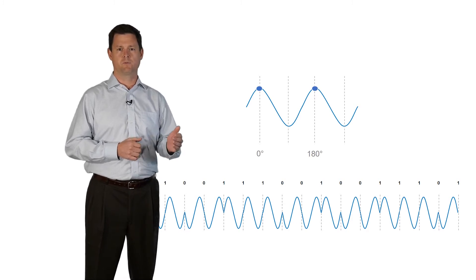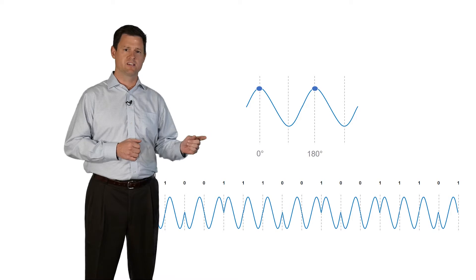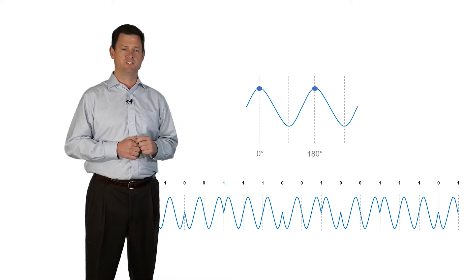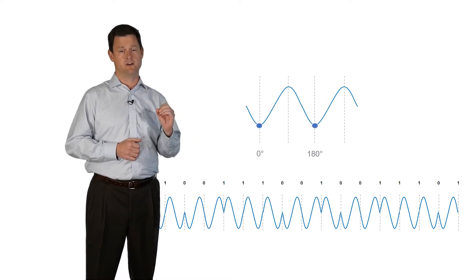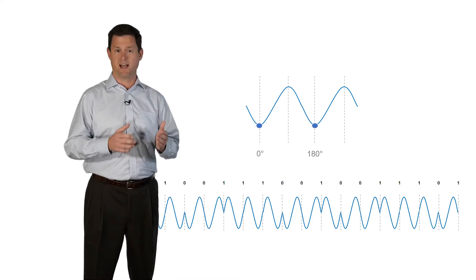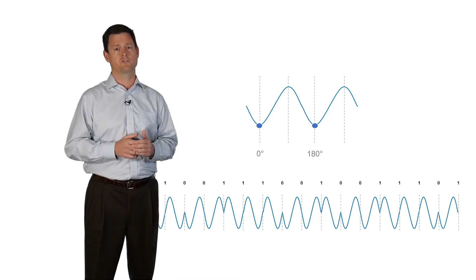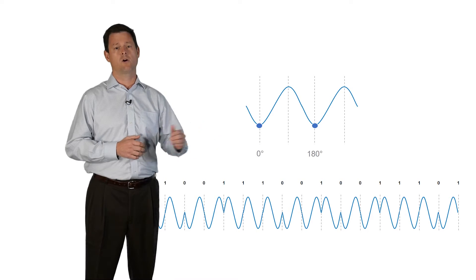So here, we're sampling the wavelength, and if it looks like this, it's a one. If we sample it again, where the phase has shifted, it's a zero. And because it's not based on power of the wavelength, we can transmit longer distances or at higher speeds.